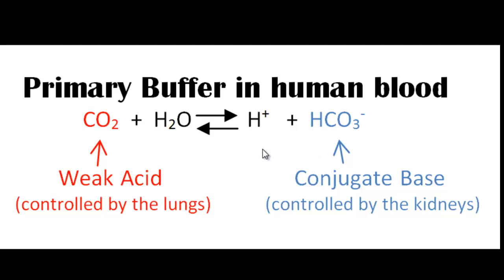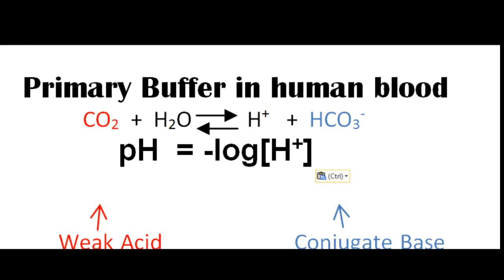The change in pH with the change in hydrogen ion concentration is represented by this equation: pH equals the negative log of the H+ ion concentration. If the hydrogen ion concentration increases, the pH will drop. If the hydrogen ion concentration decreases, the pH will increase.